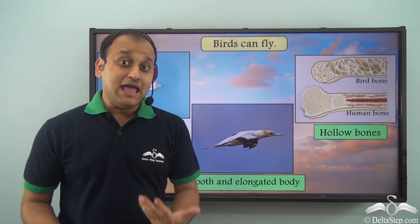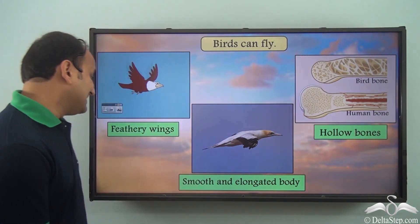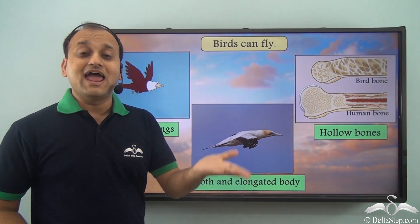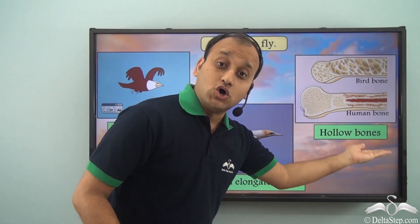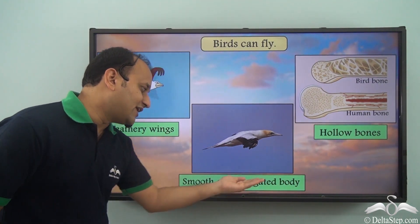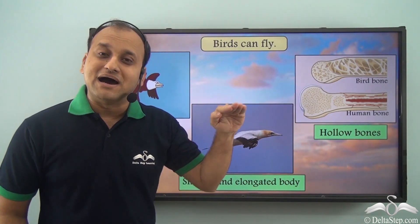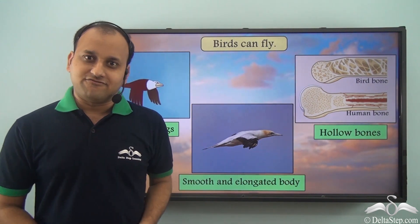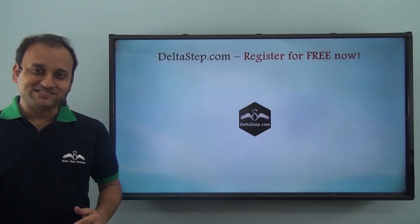So birds can fly because they have some major advantages compared to us. First, they have feathery wings, so they can easily push against the air and rise up. They also have hollow bones, which makes their body very light. And they have a smooth and elongated body, which helps them move in the air without much resistance. These are the three main reasons why birds can fly and we can't.